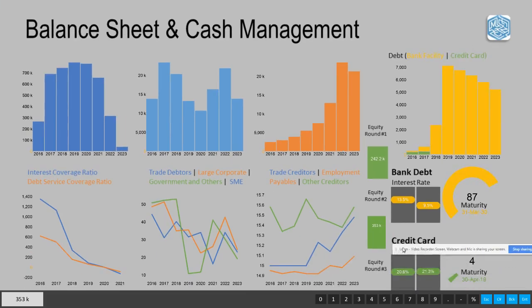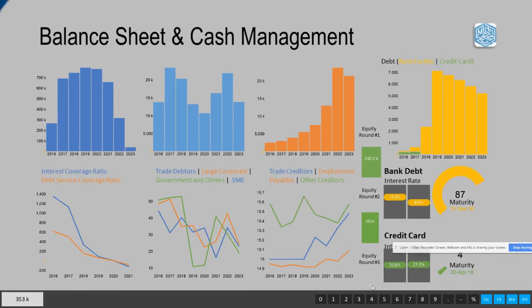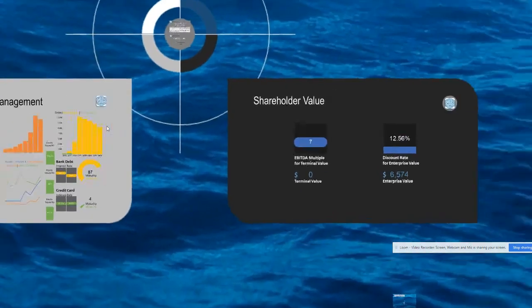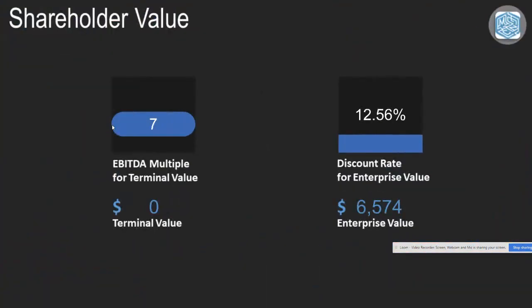So why don't we put in some more equity into the business via cash, and we drag that up — we can choose however much we want — and now we're sitting healthy for cash. But what does that mean for valuation?